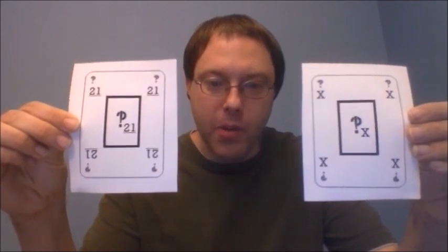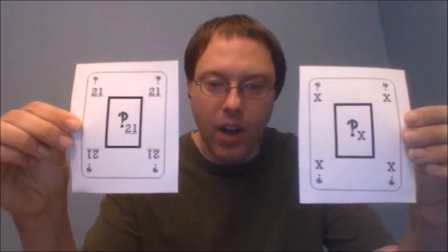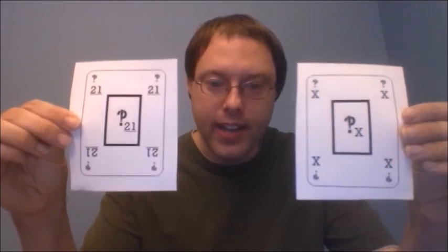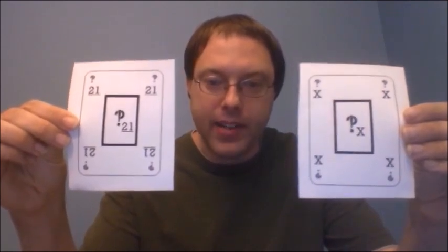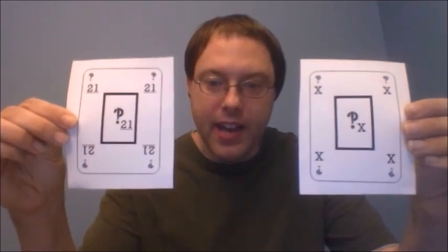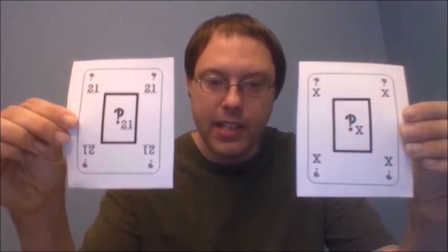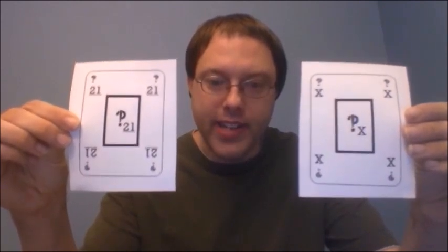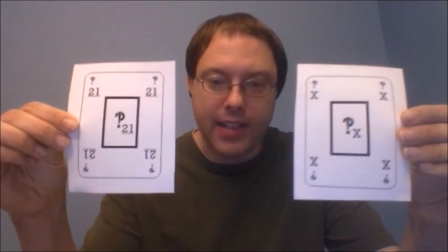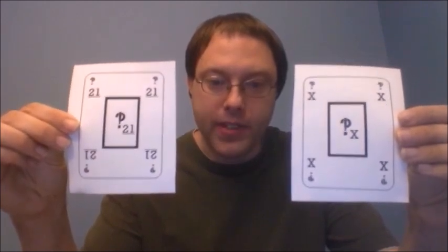Jokers numbered 1 to 21 are each based on the trick-taking card game tarot as trump cards. And a joker with an X, the excuse, is based on the trick-taking card game tarot as the highest trump or as a worthless card.